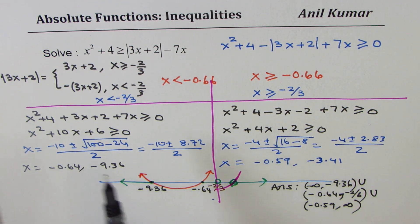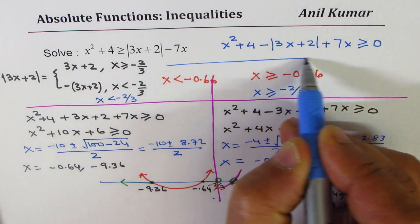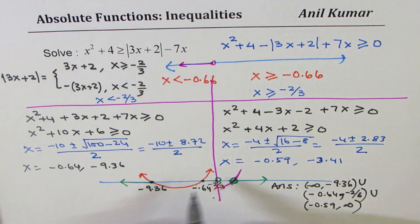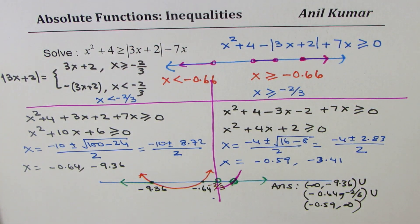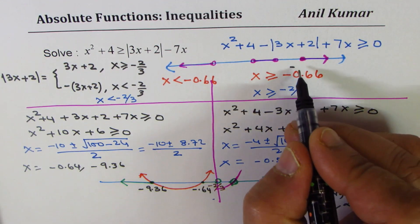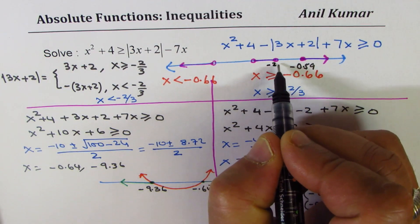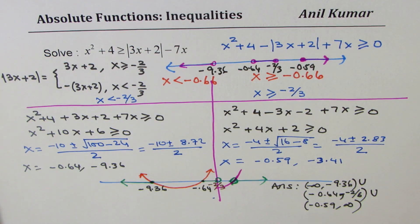On the number line, the solution is represented as: from −∞ to −9.36, then from −0.64 to −2/3 (approximately −0.666), and then from −0.59 onwards to infinity. These decimal approximations are to two decimal places. That is how you solve this type of inequality involving absolute functions.